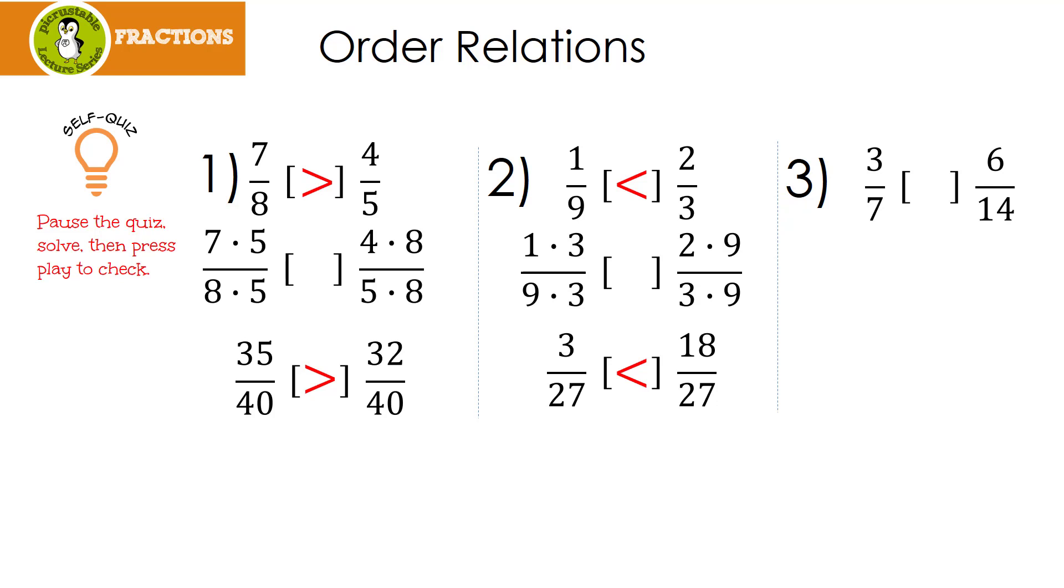Let's look at the last one, number 3. Once again, I multiplied by each other's denominator. When I did this, this gives me 42 over 98 and 42 over 98. In this case, they're exactly the same. Which means 3 sevenths equals 6 over 14.